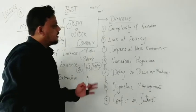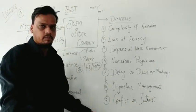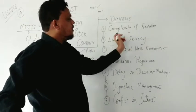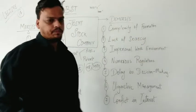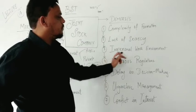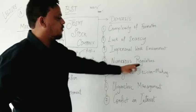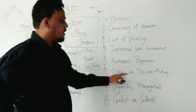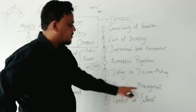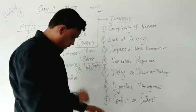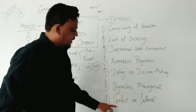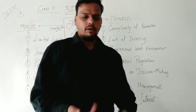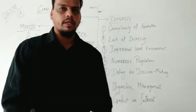Now we move forward to the demerits. Demerits has 7 points. The first is complexity of formation, then lack of secrecy, impersonal work environment, numerous regulations, delaying decision making, oligarchic management, and conflicts of interest. Every point will be studied one by one.